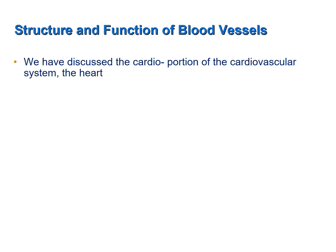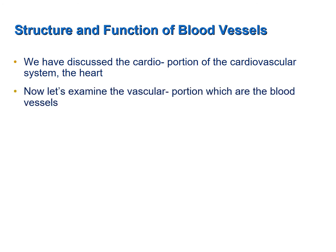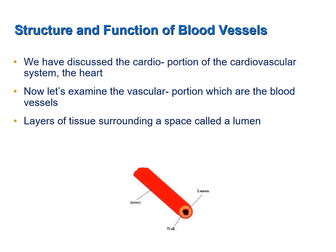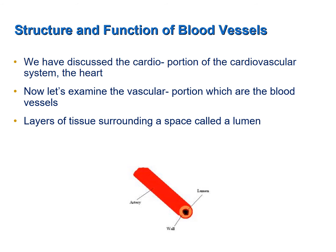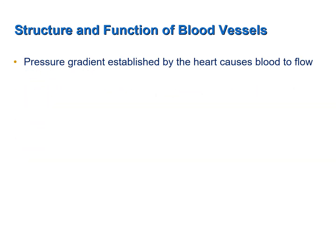We have discussed the cardio portion of the cardiovascular system, which of course is the heart. Now we turn our attention to the vascular portion, which are all of the blood vessels. A blood vessel consists of various layers of tissue surrounding a space called a lumen, and the layers of tissue surrounding the space is referred to as the wall of the blood vessel. The function of blood vessels is to allow blood to flow from the heart to the lungs and other tissues of the body and then to be returned to the heart. Remember that the cardiovascular system is a closed system. Blood flows from high pressure to low pressure and the pressure gradient is established by the heart, which causes blood to flow through blood vessels.